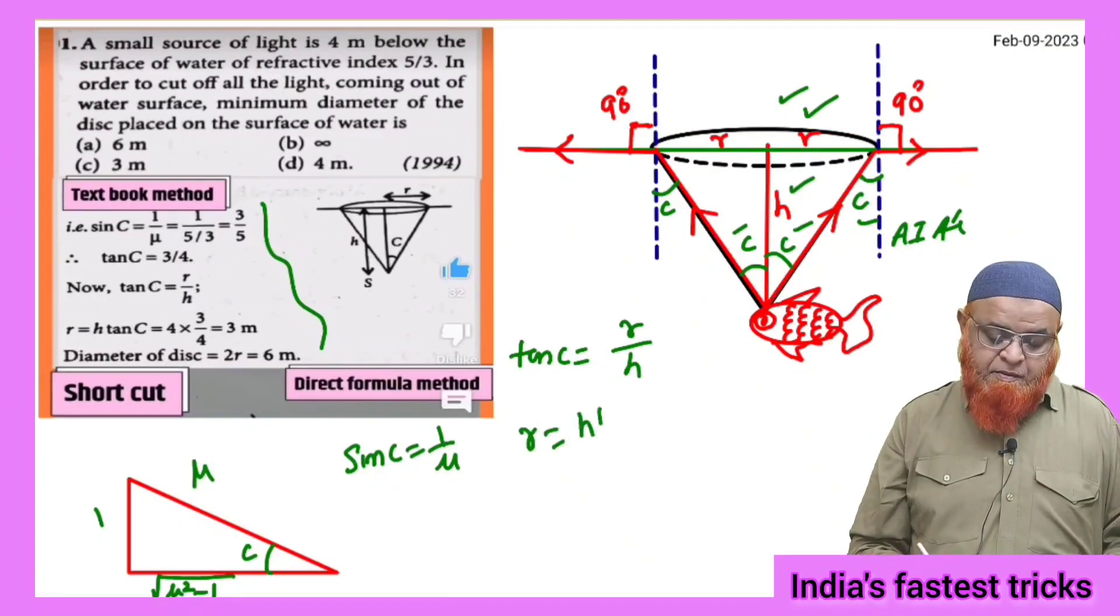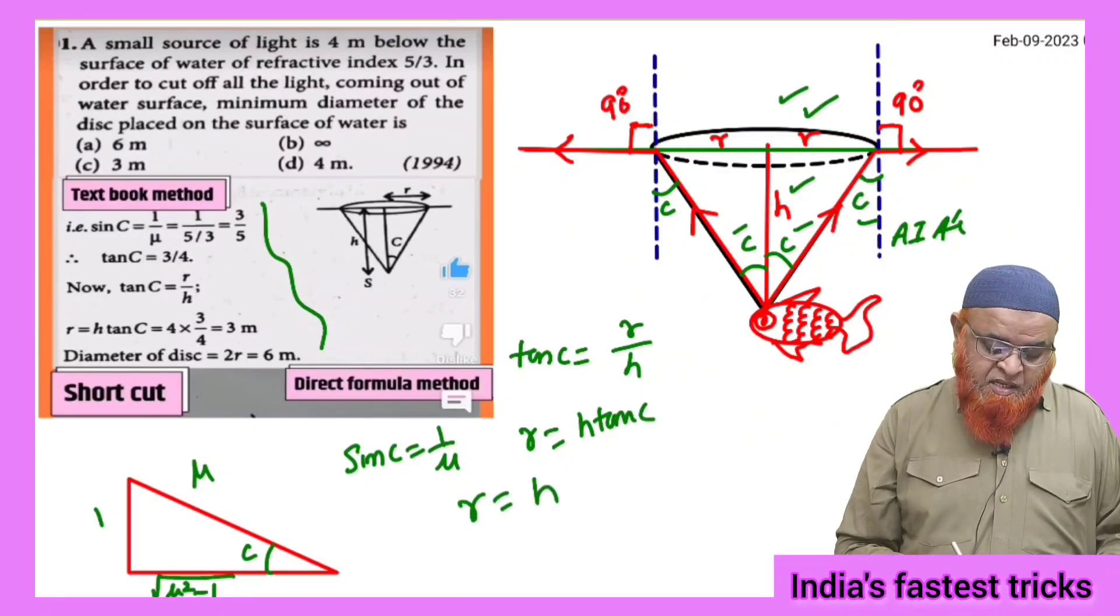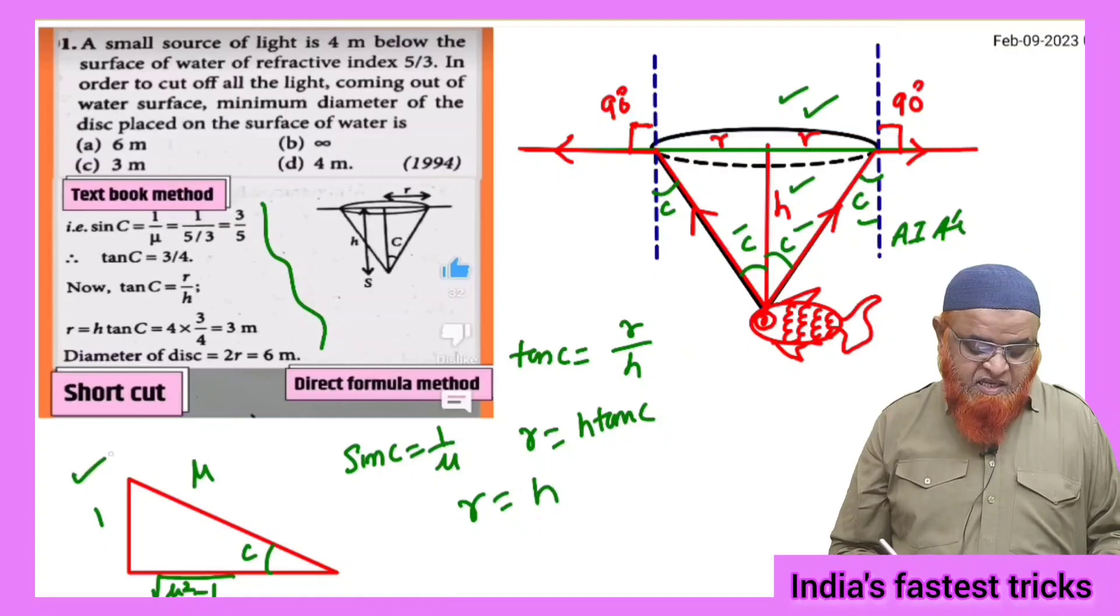So therefore we can take tan c is equal to opposite side R and adjacent side H here. So R by H we can take here. Okay. So R is equal to H tan c.